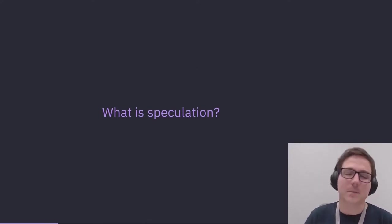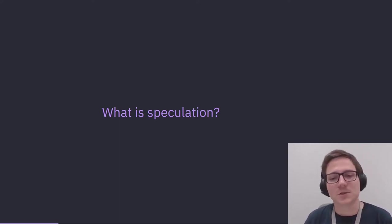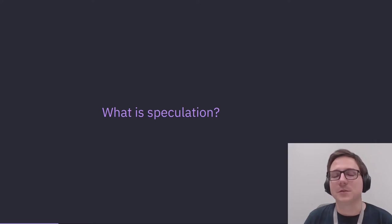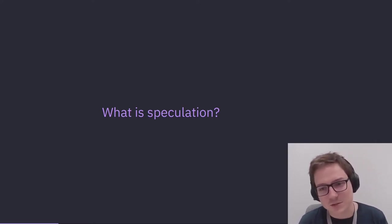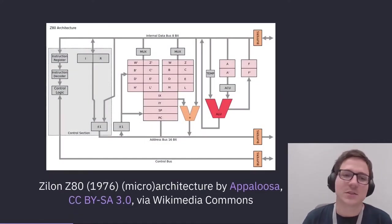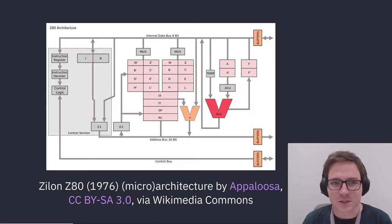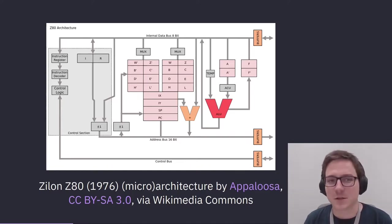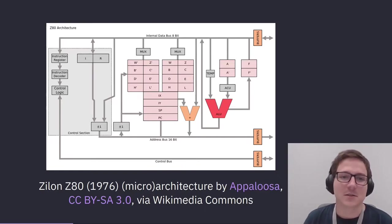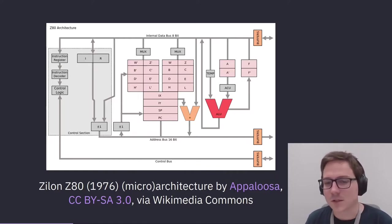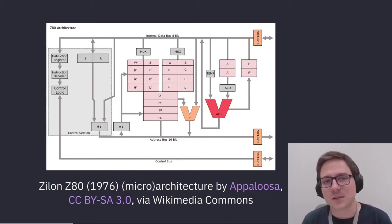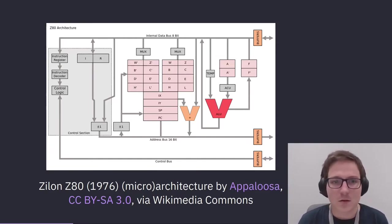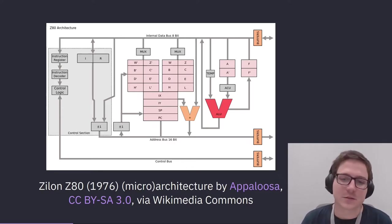We need to talk about speculation. Speculation is something that all modern high-performance CPUs for the past 20-plus years have done, and it's pretty critical to the way that they operate. The easiest way to reason about why speculation exists is to look at some designs. This is a Zilog Z80 from 1976. The overall idea is straightforward: instructions come in, they get decoded and stuff happens. It's a simple design — you can pinpoint where things are happening in each stage. This is well before the prevalence of out-of-order execution and speculation.